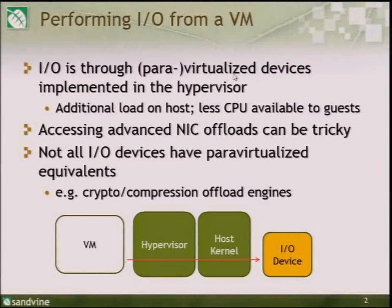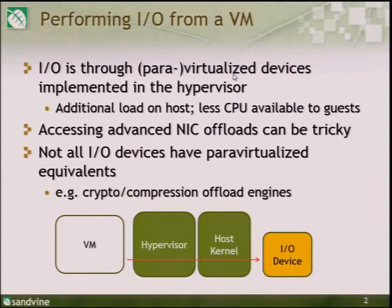Another problem is that if you want to take advantage of any advanced NIC offloads, it can be tricky. For example, with TSO, in order for that to work, the driver in the host kernel has to advertise support for TSO up to the hypervisor. The hypervisor has to advertise that through the para-virtualized interface to the VM, and then the VM's driver for the para-virtualized device has to support TSO. And as new offloads like VXLAN come online, you have to go through that whole process at each level of the stack.